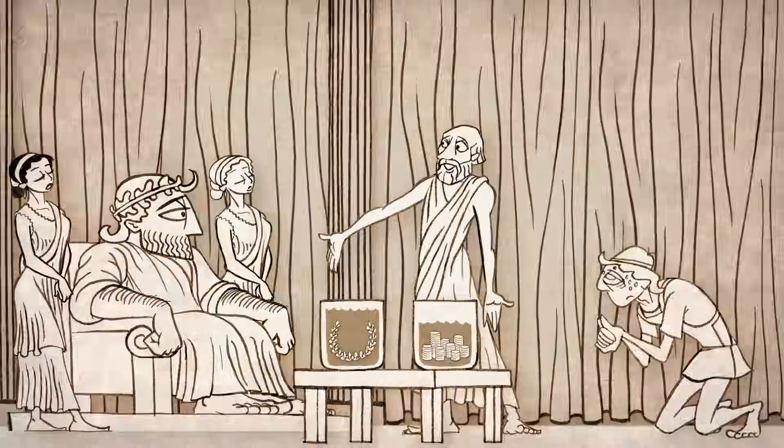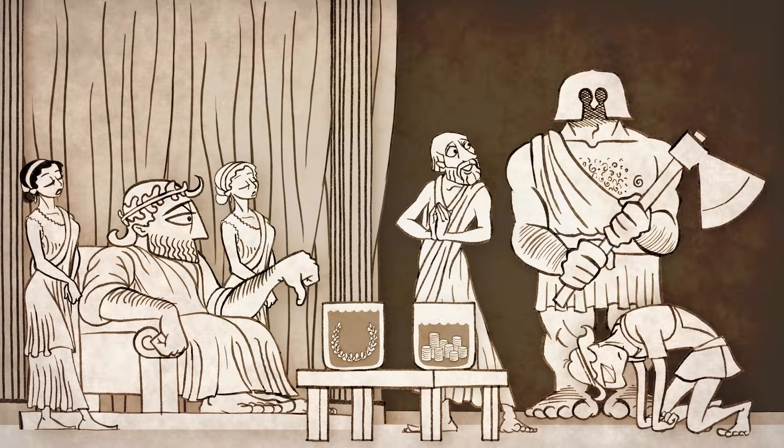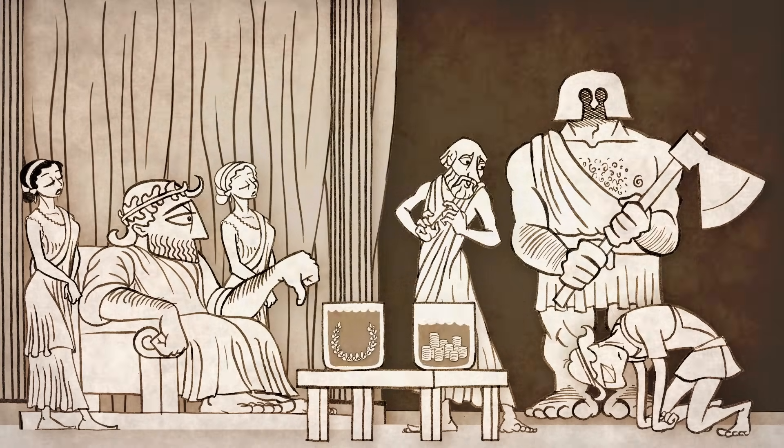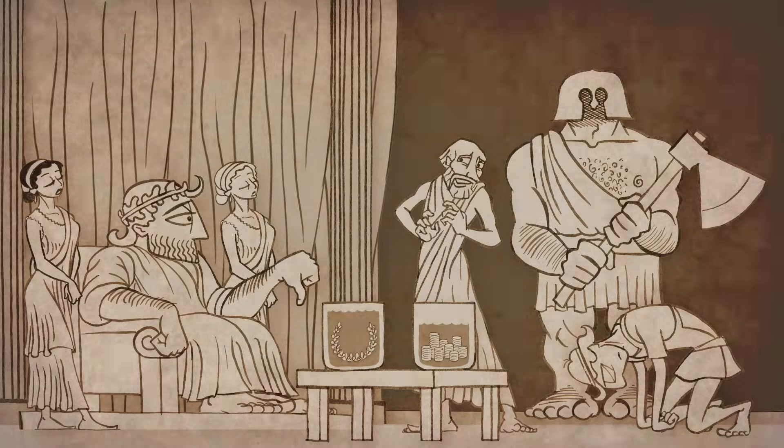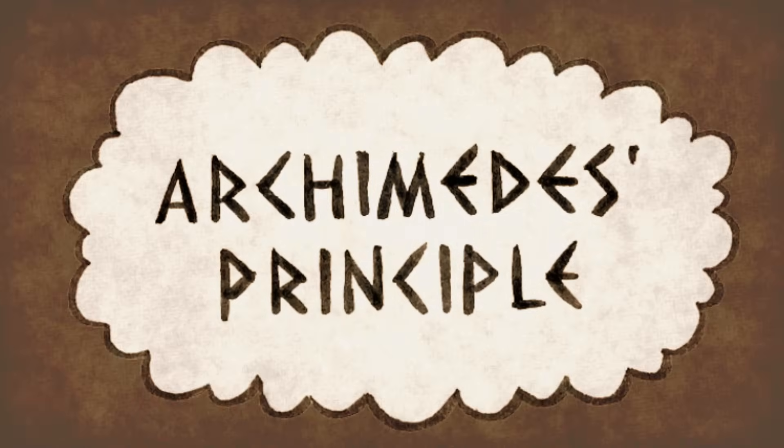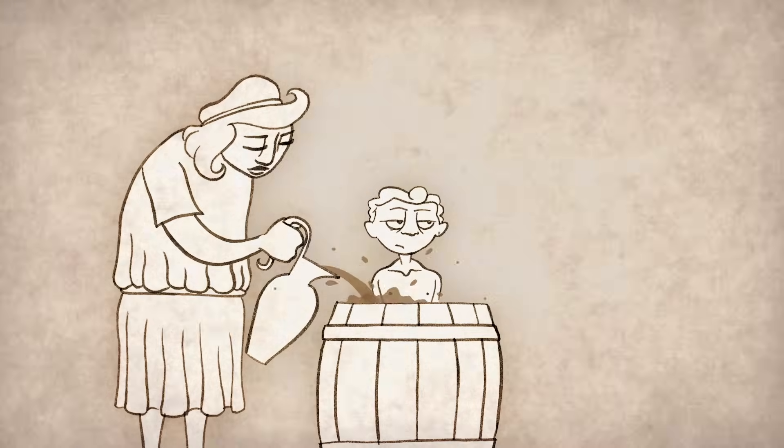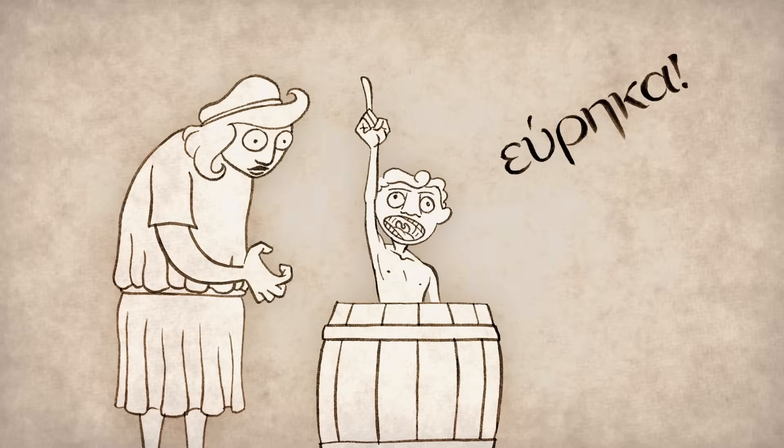When Archimedes went back to the king and did his test, the story says he found that the goldsmith had indeed cheated the king and slipped some silver in. These days, using the way an object displaces water to measure volume is called Archimedes' principle. The next time you take a bath, you can see Archimedes' principle in action, and maybe you'll have a genius idea of your own.